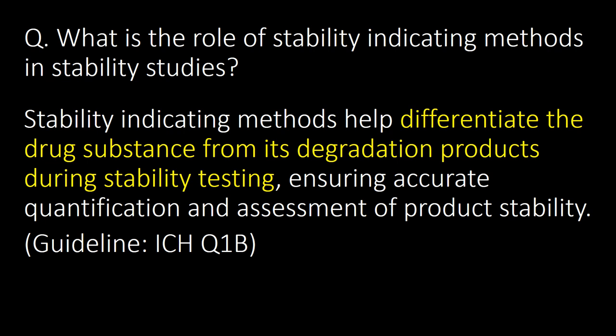What is the role of stability indicating methods in stability studies? Stability indicating methods help to differentiate the drug substance from its degradation products during stability testing, ensuring accurate quantification and assessment of product stability. Reference Guideline ICH Q1B.